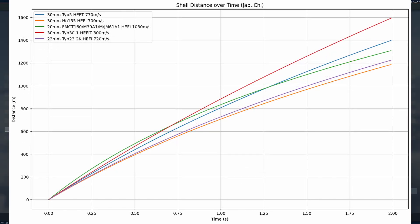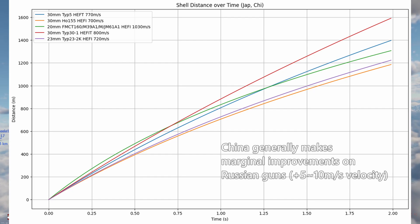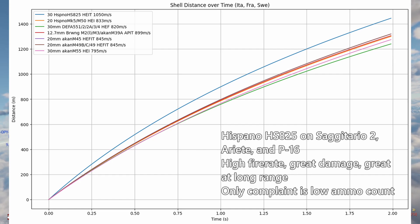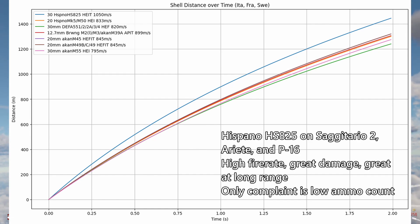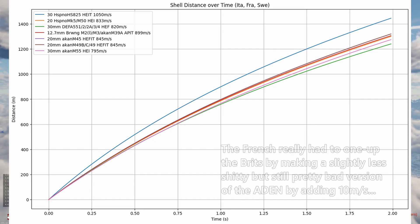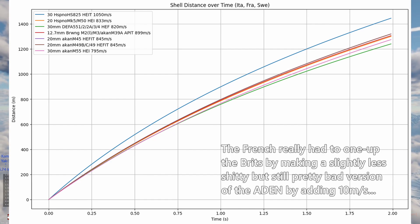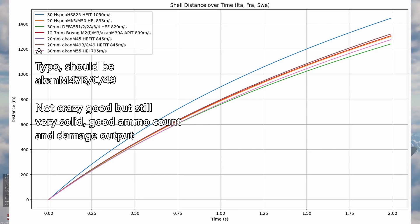Japan doesn't get anything new until the Vulcans, which are better but can get pretty draggy at range, losing to the Type 5 30mm on the Kikka above 1km. The Chinese get a good 30mm and a below average 23mm. The Italians get one of my favorite guns in the game, the Hispano HS-825, which just wins by a long shot — found on the Sagittario, the Ariete, and the P.16. France gets about 5 different variants of the DEFA, which all have basically the same ballistics — slightly more muzzle velocity than the Aden but still pretty below average. The Swedes get a few new guns that don't really improve on the ballistics from previously but are still just as punchy.